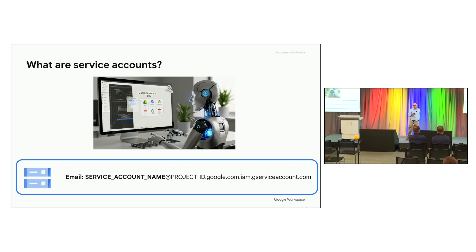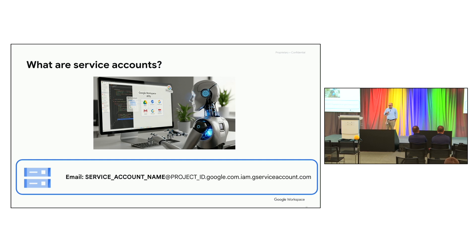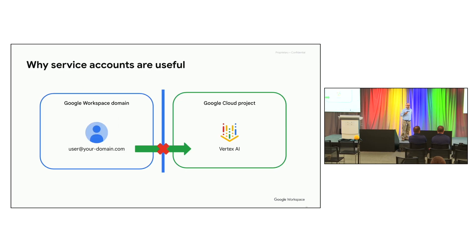A service account is a non-human user account that provides an identity for your application. You create it through a GCP Google Cloud project and give it roles and permissions to call APIs. Once created, it will have a long email address — the service account name at the project ID dot Google.com. You also generate a key that allows you to generate tokens to call APIs using that service account identity. Service accounts are very useful specifically when calling external APIs, like Vertex AI, where you don't want to give each user in your domain access.